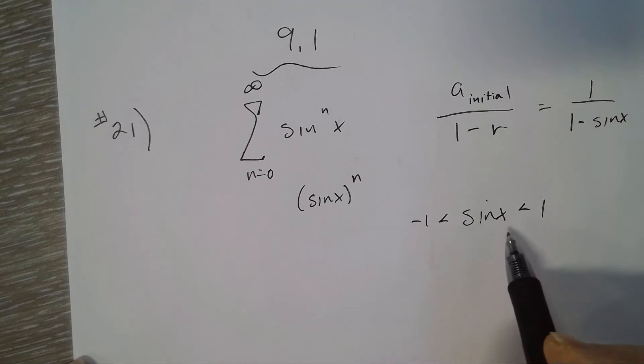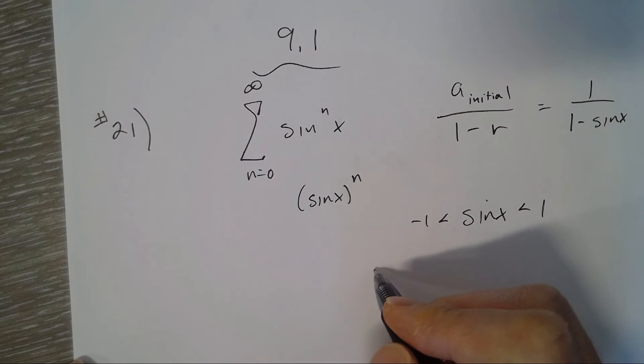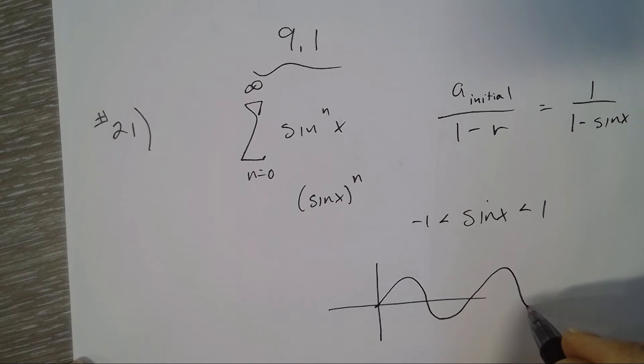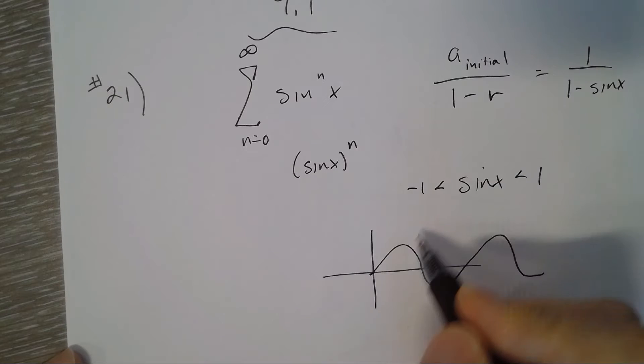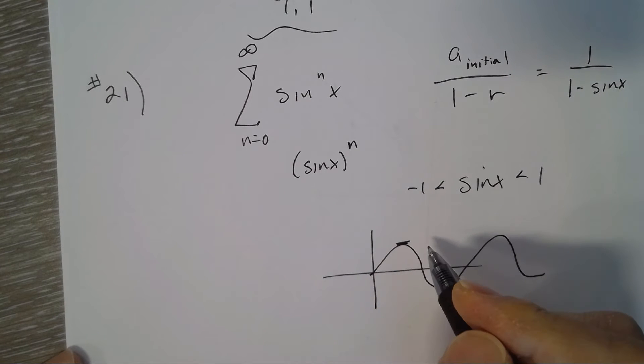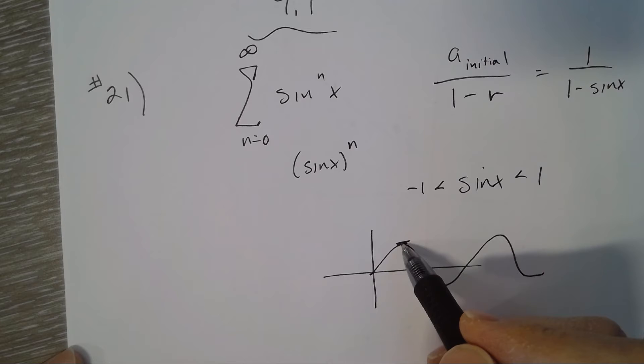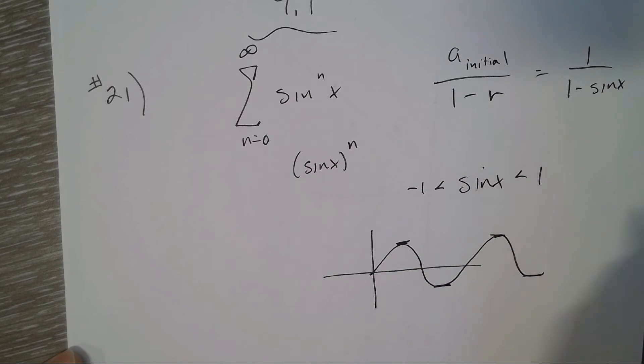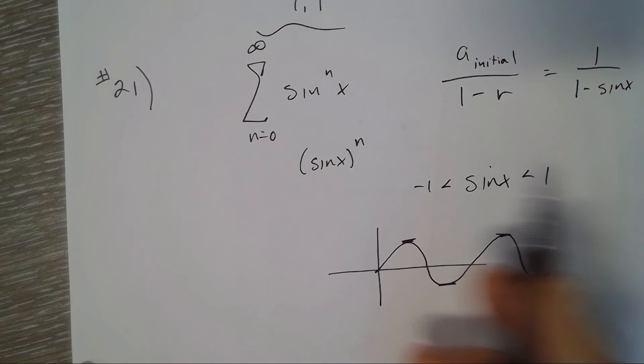Okay, so sine x, a couple ways to represent it. We know that it's a periodic function, looks like this. It'll hit 1, which it will not converge at that point. It also hit negative 1 and 1.